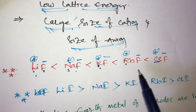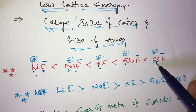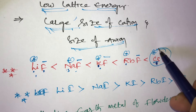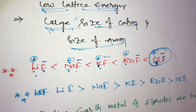Here, what is the largest size of cation? Cesium is the largest size of cation. So solubility is highest in cesium fluoride. Solubility depends on large size of cation and anion — if cationic size is large, solubility will be more.